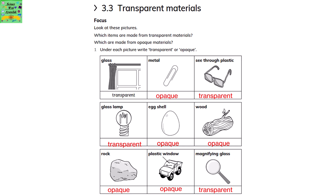Glass is transparent, metal is opaque, see-through plastic is transparent, glass lamp is transparent, an egg shell is opaque, wood is opaque, rock is opaque, plastic window is opaque because you cannot see through it, and magnifying glass is transparent.